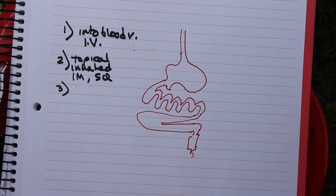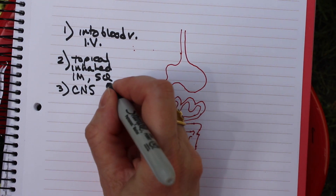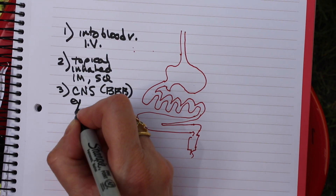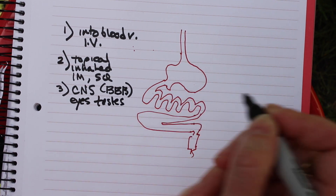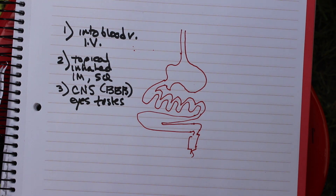Another way is to directly inject the drug into an area of immune privilege — places like your brain and spinal cord, because they have the blood-brain barrier, and also the eyes and testes. Getting drugs to these areas via the bloodstream is challenging because a lot of drugs can't cross the blood-brain barrier, so that's kind of a special consideration.